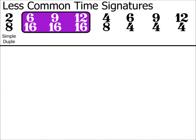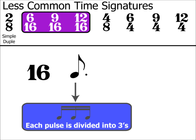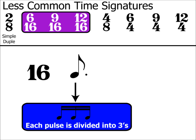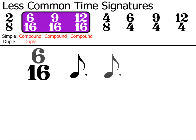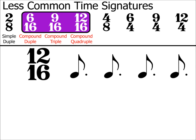For time signatures with a 16 at the bottom, the pulse is a dotted quaver. Each dotted quaver can be split into 3 equal parts — semiquavers. So, as they can be split into groups of 3, we know that these 3 time signatures are compound. 6/16 has 2 pulses, so it is compound duple. 9/16 has 3 pulses, making it compound triple. And 12/16 has 4 pulses, making it compound quadruple.